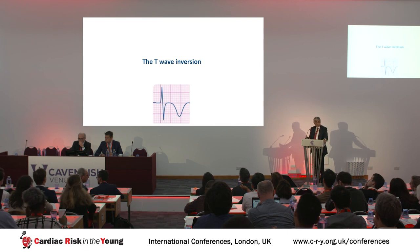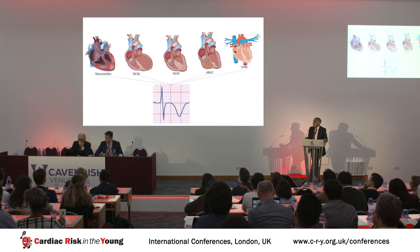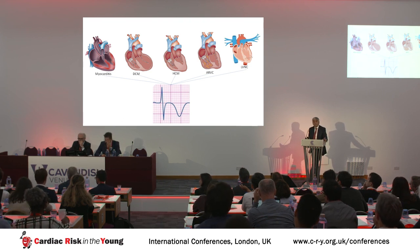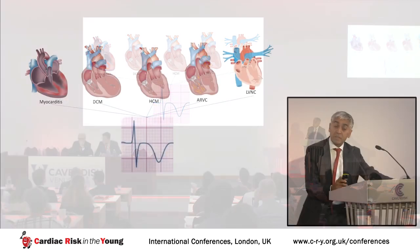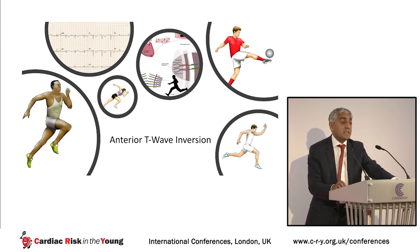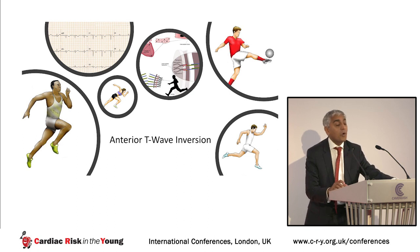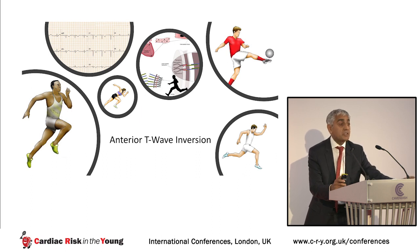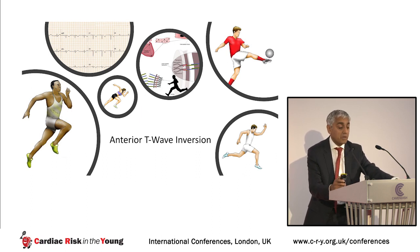However, some athletes also show T wave inversion that overlaps with the vast majority of conditions implicated in sudden cardiac death. Anterior T wave inversion specifically is present in around 60% of people with arrhythmogenic right ventricular cardiomyopathy, but may also be present in some athletes depending on their ethnicity, the type of sport they play, their age, and their sex. I'd like to go through these types of athletes one by one.